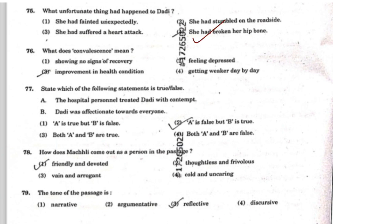Question 76: 'What does convalescence mean?' We have to give the meaning. There are four options. The correct answer is the third option: 'Improvement in health condition.' If you read the paragraph and don't know the meaning, you can figure it out from the sentence context. Convalescence means health recovery, so the third answer is correct.